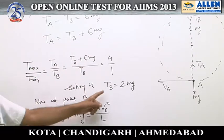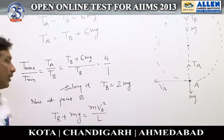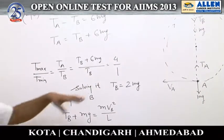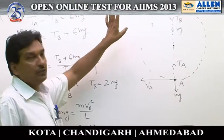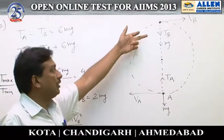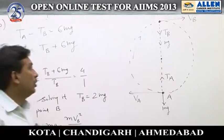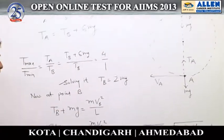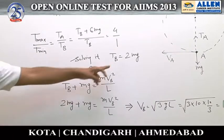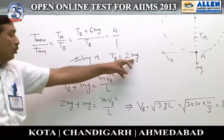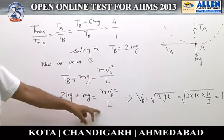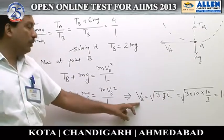At point B, the equation of motion gives that centripetal force is provided by both tension and mg, so T_b plus mg equals mv_b squared by l. Substituting T_b equal to 2mg, we get 2mg plus mg equals mv_b squared by l, and solving gives v_b equal to the square root of 3gl.